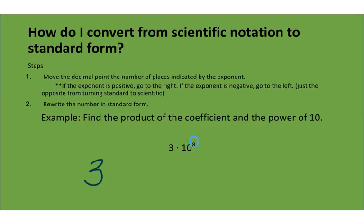And I know because it was positive, I'm making my number very large. So I add 8 zeros. Now I have 300 million. That's what my number stands for. This is scientific. This is standard.